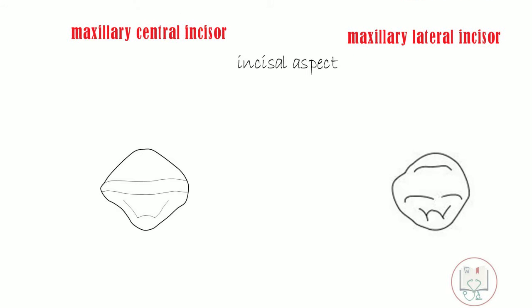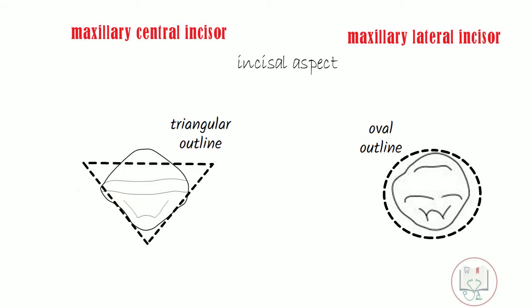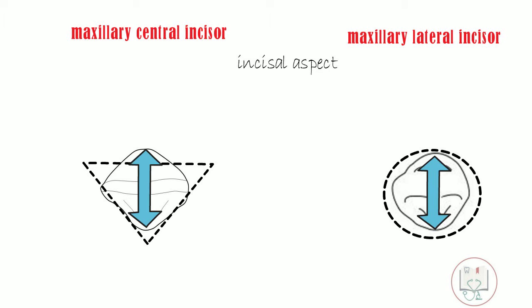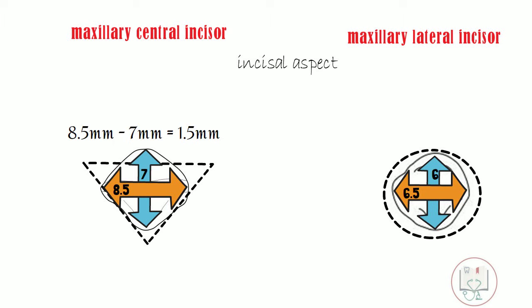From the incisal aspect, the outline form of the central incisor is triangular, whereas in the lateral incisor it is ovoid. This is because of the difference in labiolingual and mesiodistal diameters of the two incisors. In the central incisor the difference is 1.5 millimeters, whereas in the lateral incisor it is only 0.5 millimeters.